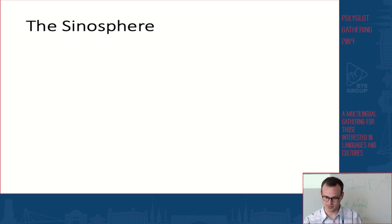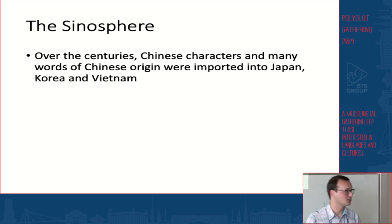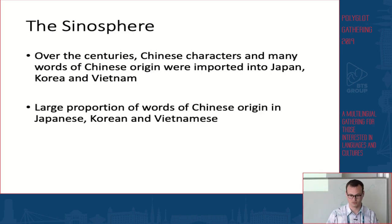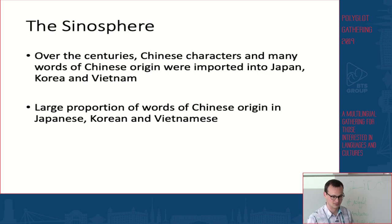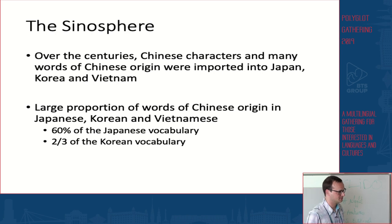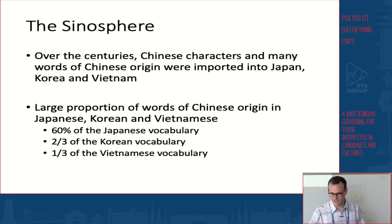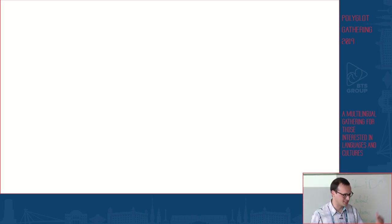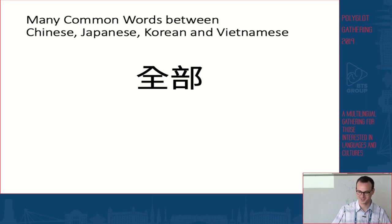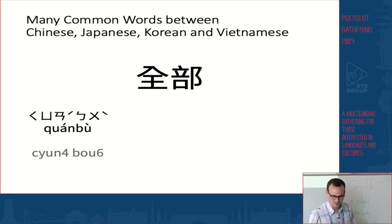Throughout the centuries, Chinese characters and many words of Chinese origin have been imported into Japanese, Korean, and Vietnamese. As a result of this massive import of vocabulary and characters, there is now a large proportion of words of Chinese origin in these languages. These words make up about 60% of the Japanese vocabulary, two-thirds of the Korean vocabulary, and about one-third of the Vietnamese vocabulary. One example is this word which means 'all' or 'everything.'